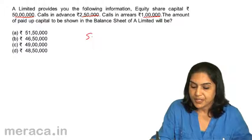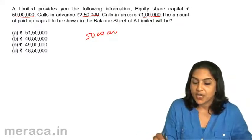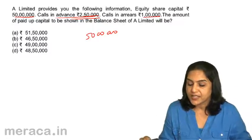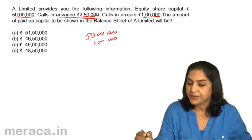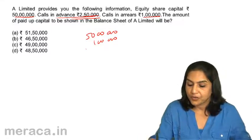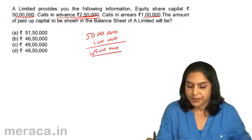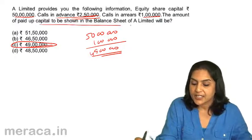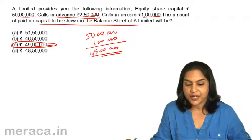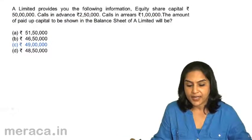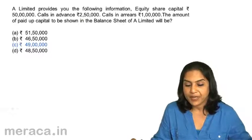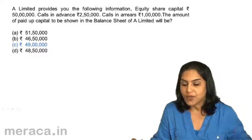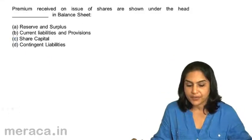Equity share capital is 50 lakh. Calls in advance is not a part of share capital. Calls in arrears — let us reduce 1 lakh. Therefore, 49 lakh should be the amount of paid-up capital as disclosed in the balance sheet. Correct answer is C: 49 lakh. That is called-up capital less calls in arrears of 1 lakh. Calls in advance do not form a part of share capital.